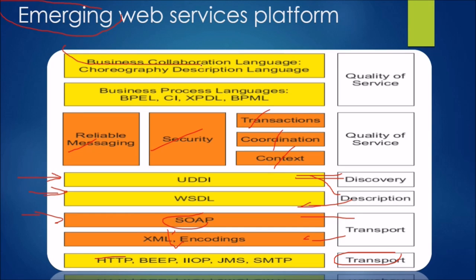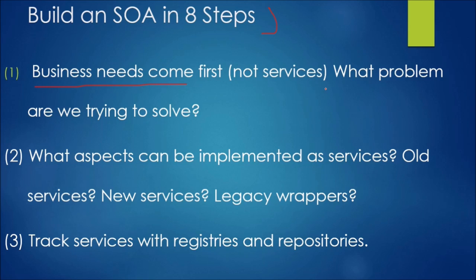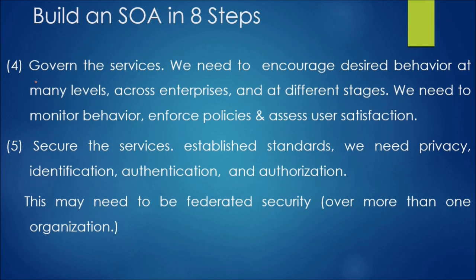Here is how to build an SOA in 8 steps. First, business needs come before services — ask what problem are we trying to solve. Second, determine what aspects can be implemented as services: old services, new services, or legacy wrappers. Third, track services with registries and repositories. Fourth, govern the services — encourage desired behavior across the enterprise, monitor behavior, enforce policies, and assess user satisfaction.